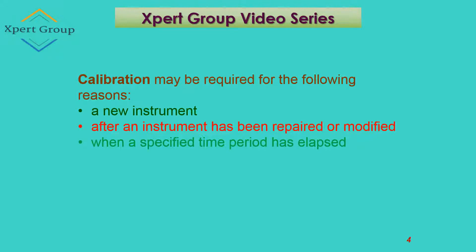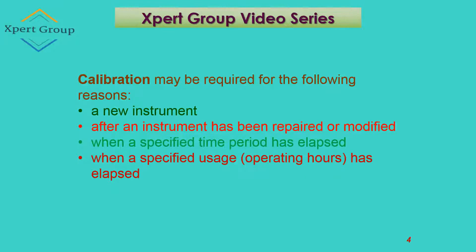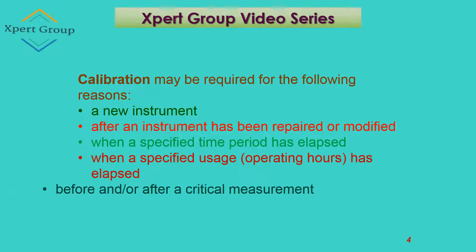When a specified time period has elapsed — if the manufacturer has provided that the instrument should be calibrated after a certain period of time and that period has passed — you have to perform calibration. Similarly, if the operating hours of the specified equipment have elapsed, you must also perform calibration.